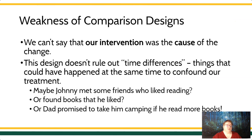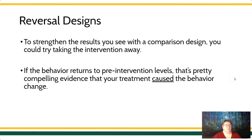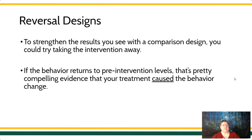If you want experimental control — if you want to demonstrate that behavior changes when and only when treatment is put into place — you need something like a reversal design or a multiple baseline design. With reversal designs, you strengthen your confidence that your treatment and only your treatment caused that change because, unlike the comparison design, you actually take the treatment away. You have a baseline naturalistic condition, a treatment condition where your intervention is in place, and then you remove treatment to see if the behavior will go back to baseline levels.